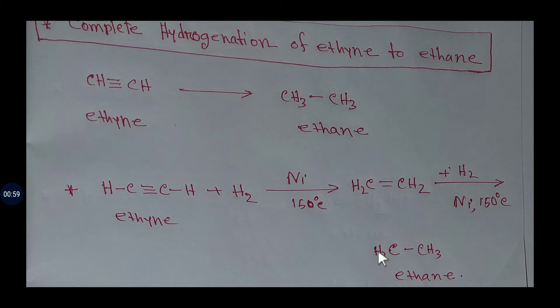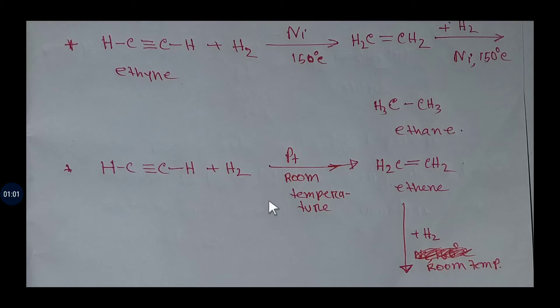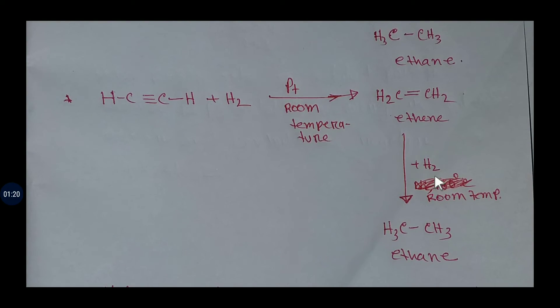Again, this ethyne will react with hydrogen in presence of palladium catalyst. But here we will use room temperature. And at first we will get ethene, then another molecule of hydrogen will react to this ethene molecule and we will get ethane.